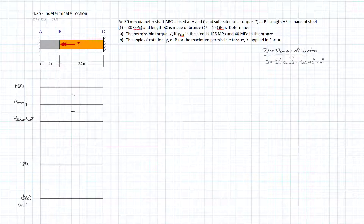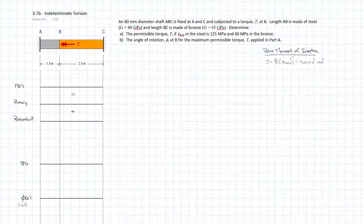I've gone ahead and calculated the polar moment of inertia. It's a prismatic rod in that it's the same cross-section all the way through, and that's calculated up on the sheet. We know the material properties, and what we don't know is the torque T. We're given limits for the maximum shear stress: 125 megapascals if it occurs in the steel, or simply 40 megapascals if it occurs in the bronze. So we're going to have to calculate both.